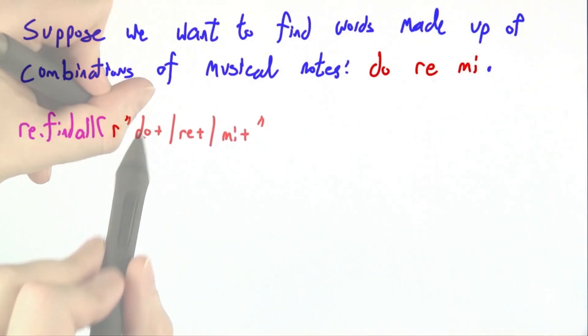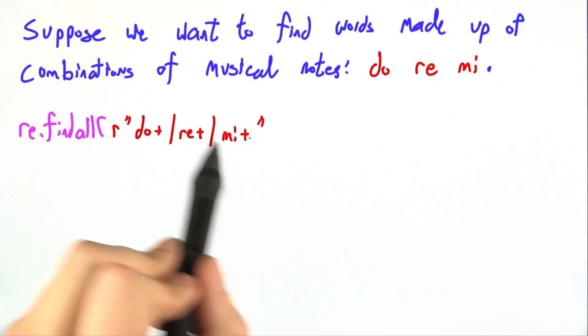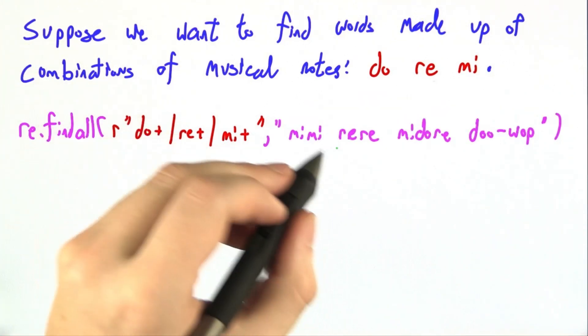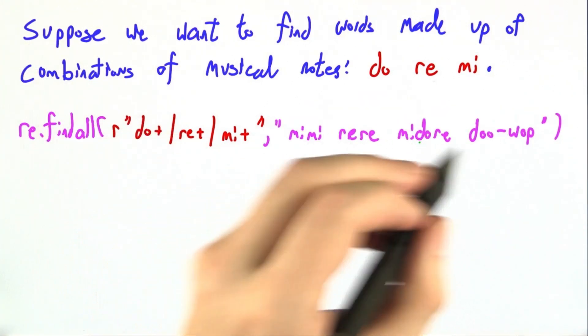So we set out to try it. We can have a bunch of dos, or a bunch of re's, or a bunch of mi's. And let's say we're looking for all of the matching strings in mi, mi, re, re, mi, do, re, do, wop.